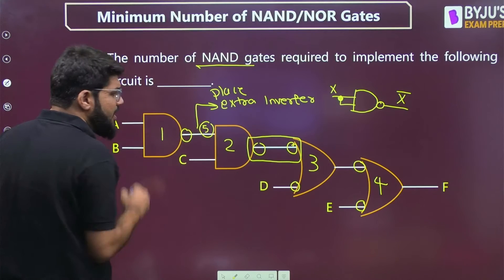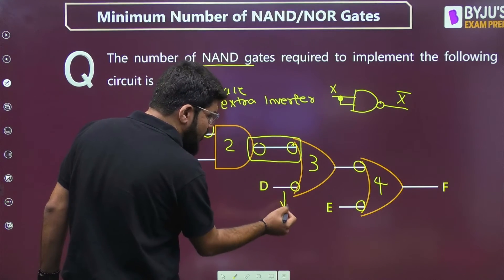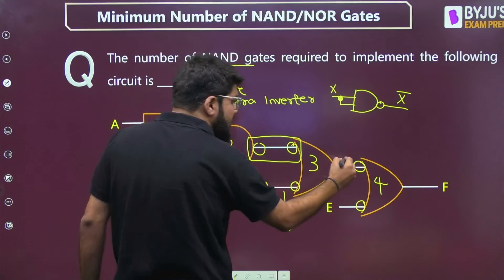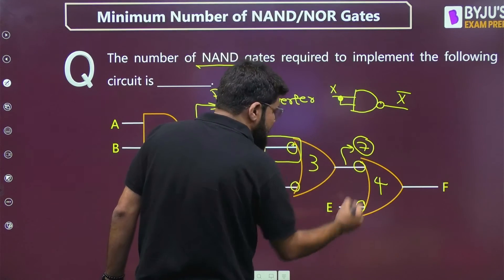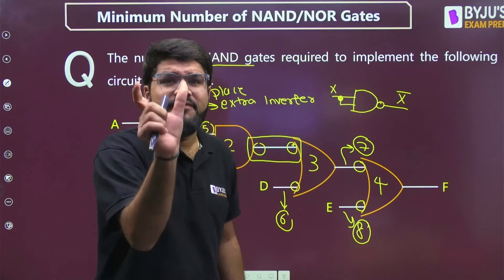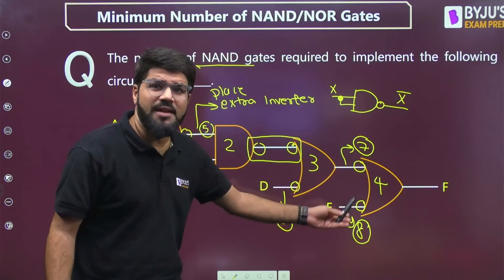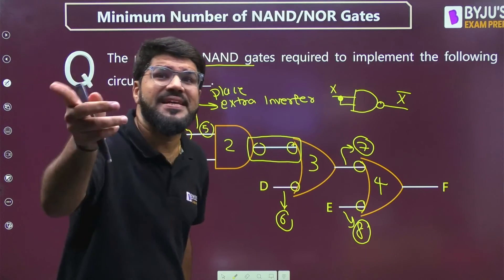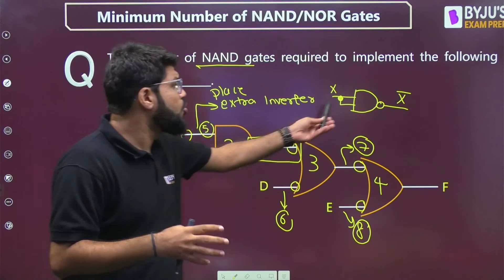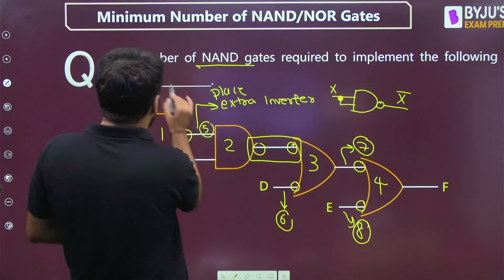So we add one more NAND gate — that's count number 5. Similarly, wherever a single bubble remains, we need one more inverter each time. So we increment: NAND gate 6, NAND gate 7, NAND gate 8. The moral: wherever you see bubbles in series they cancel — no extra gate needed. But wherever you see a single bubble, compensate with one extra inverter (one NAND gate). Just keep incrementing the count. The answer is 8 NAND gates.